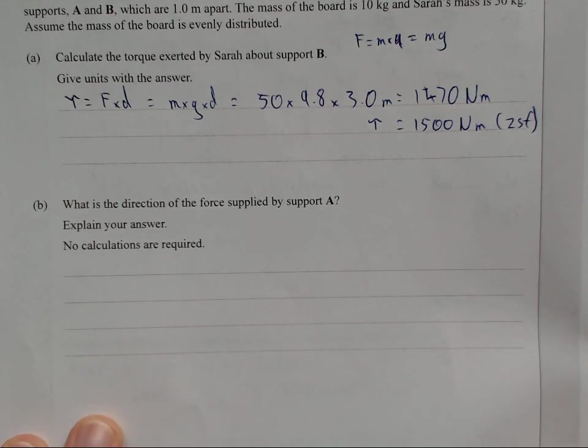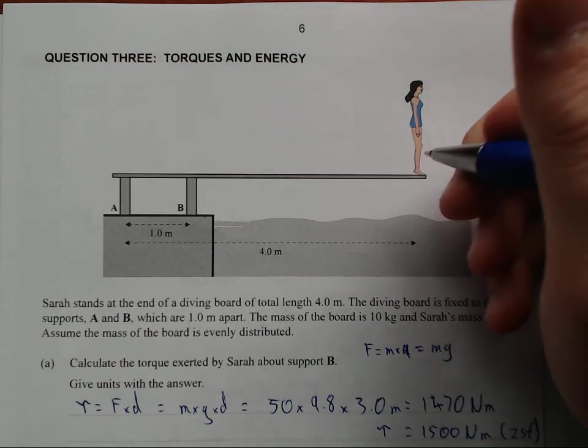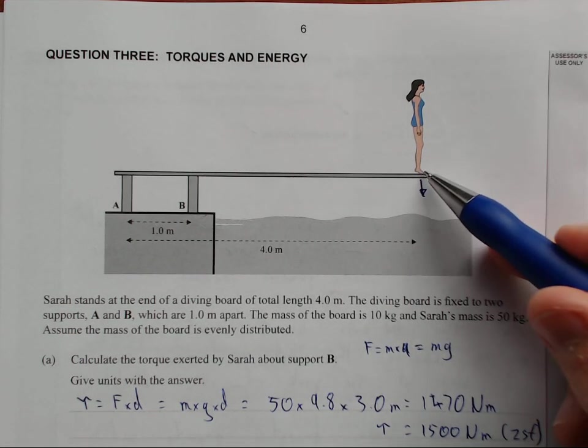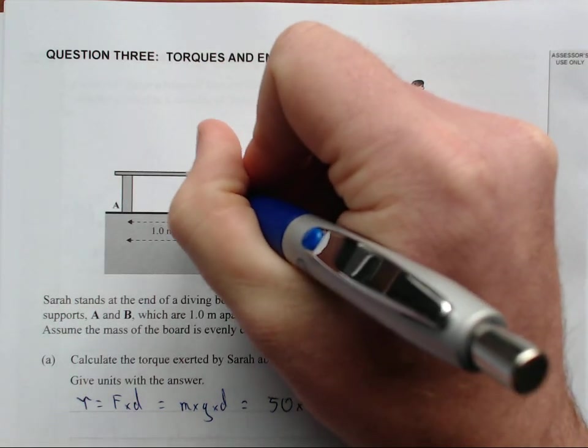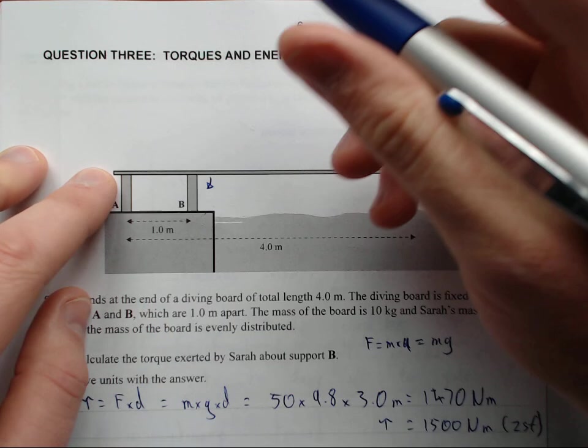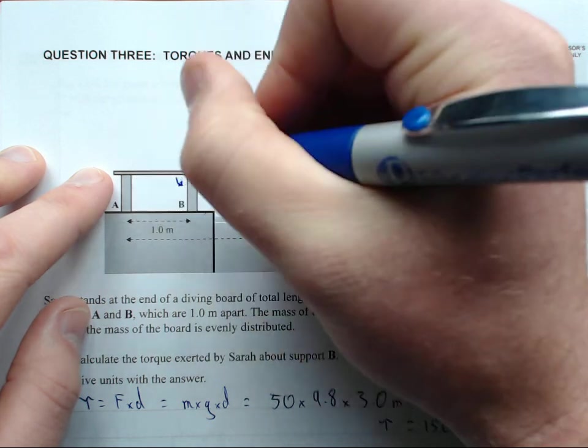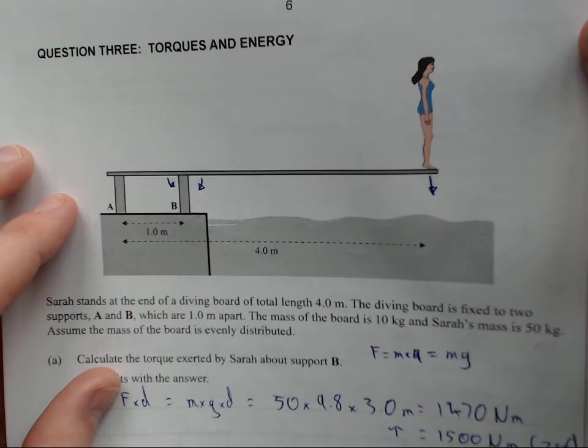Why is the direction of the force supplied by support A? Explain your answer. No calculations required. So we have, if she's creating a torque, she's creating a force down this way, which means she's creating a clockwise torque, which means in order for this not to rip off the ground, there needs to be an anti-clockwise torque provided by A. So it makes sense. A needs to provide a downwards force.